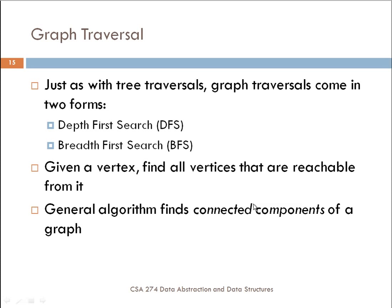Just as with tree traversals, graph traversals come in basically two forms, the first being a depth-first search and the second being breadth-first search. The idea with these types of traversals is that given some vertex, we want to find all the vertices that are reachable from it.